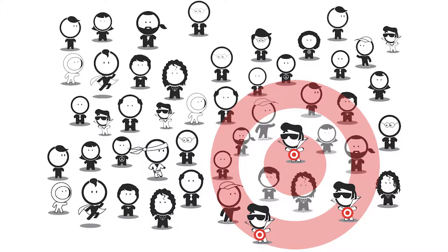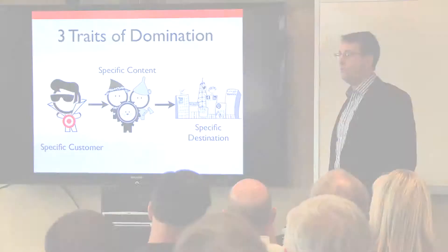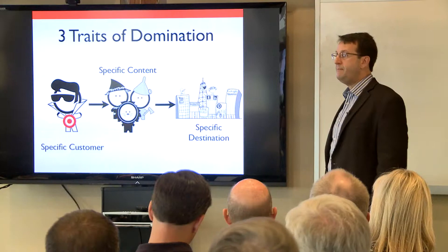Social media and internet marketing has made it so that we can pinpoint exactly who we want to. Specific customer, specific ad, specific place they go to. What that means is that you have the right information for the right buyer and you send them to the right place to accomplish what you want them to have.